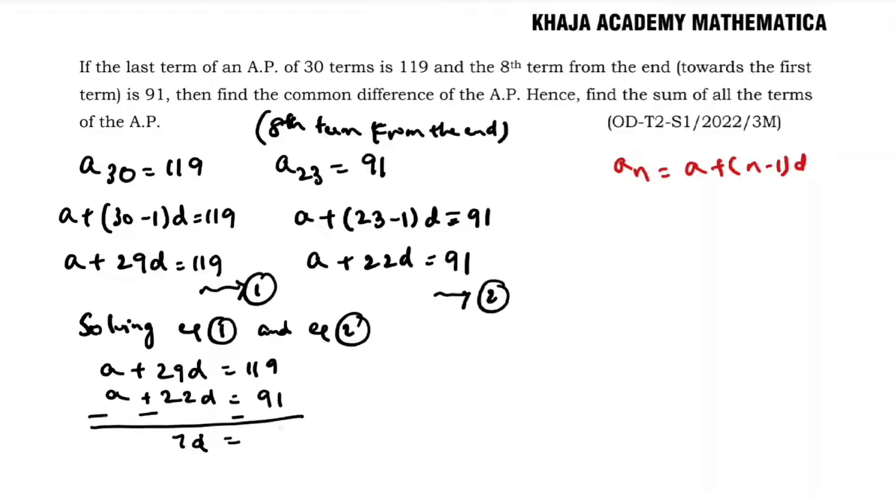Subtracting these: 7d = 28. So d = 28/7. The value of d is 4. The common difference is 4.